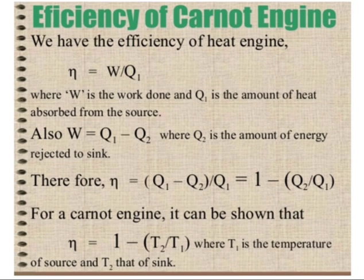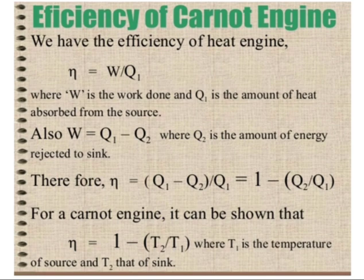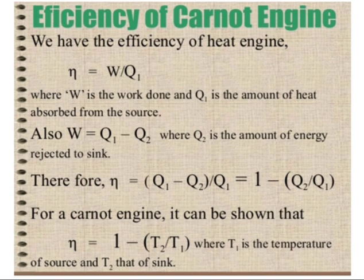The efficiency of the Carnot engine is calculated as eta, where eta represents efficiency. Eta equals W divided by Q, where W is the work done and Q is the heat absorbed from the source. Since W equals Q1 minus Q2, where Q2 is the energy rejected to the sink, eta equals (Q1 minus Q2) divided by Q1, which simplifies to 1 minus Q2/Q1. Using temperatures, eta equals 1 minus T2/T1, where T1 is the source temperature and T2 is the sink temperature.